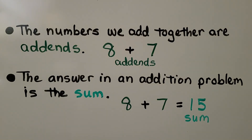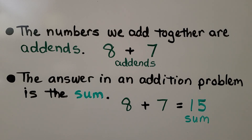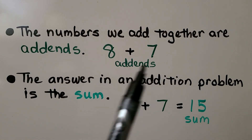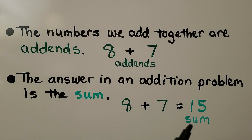Remember: the numbers we add together are addends. The 8 and the 7 are addends in an addition problem, and the answer is the sum. 8 plus 7 is equal to 15, so the sum of these addends is 15.